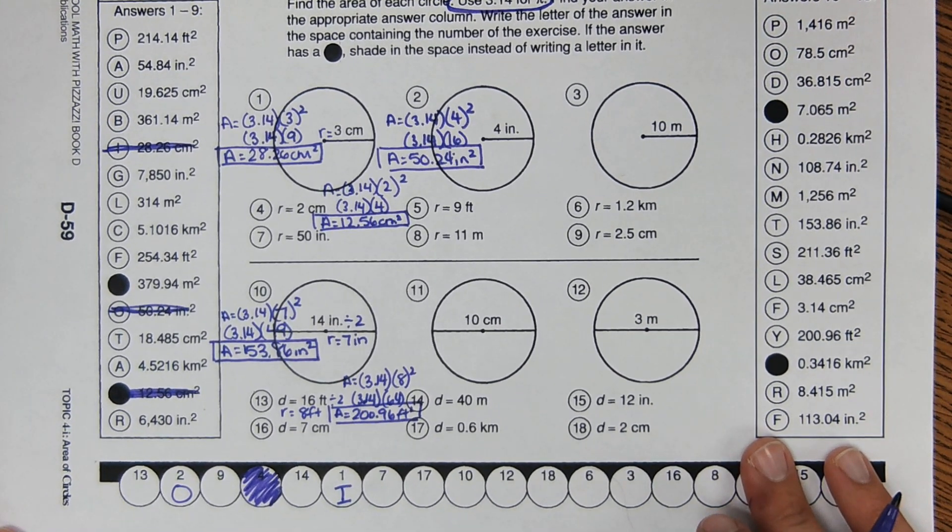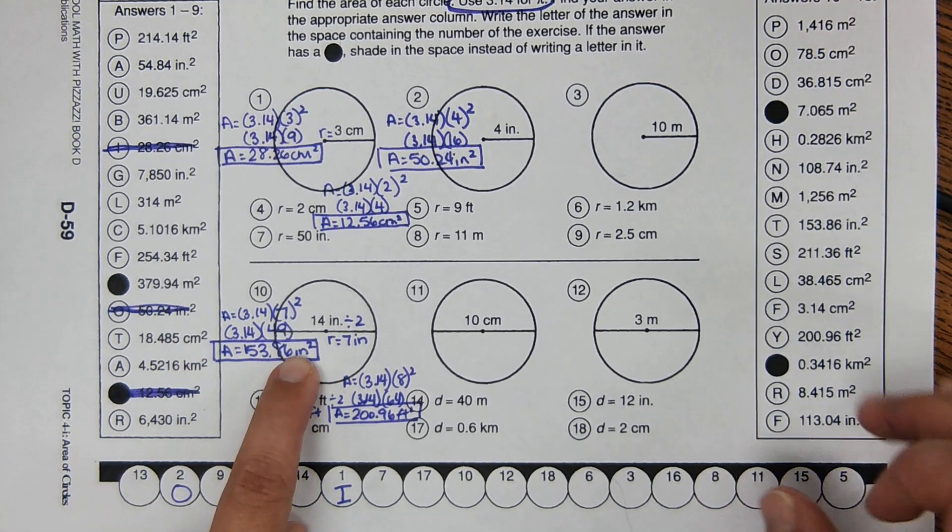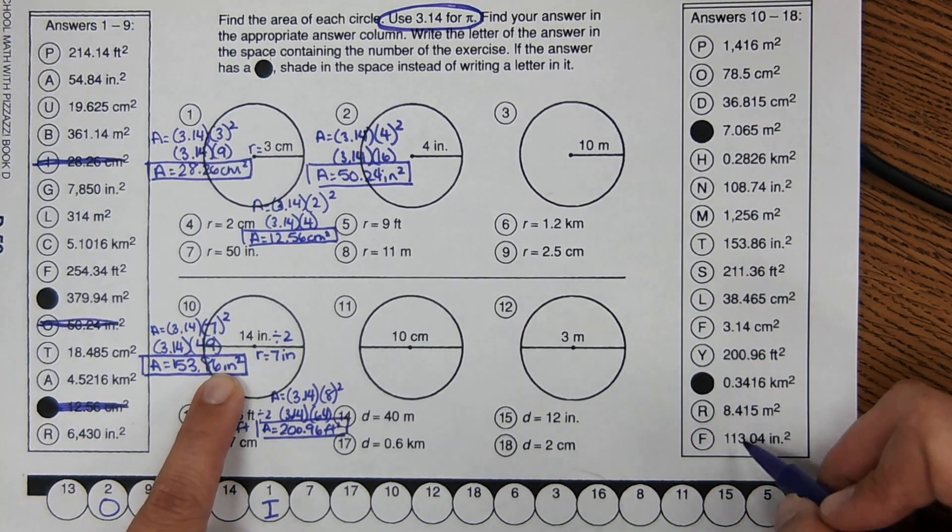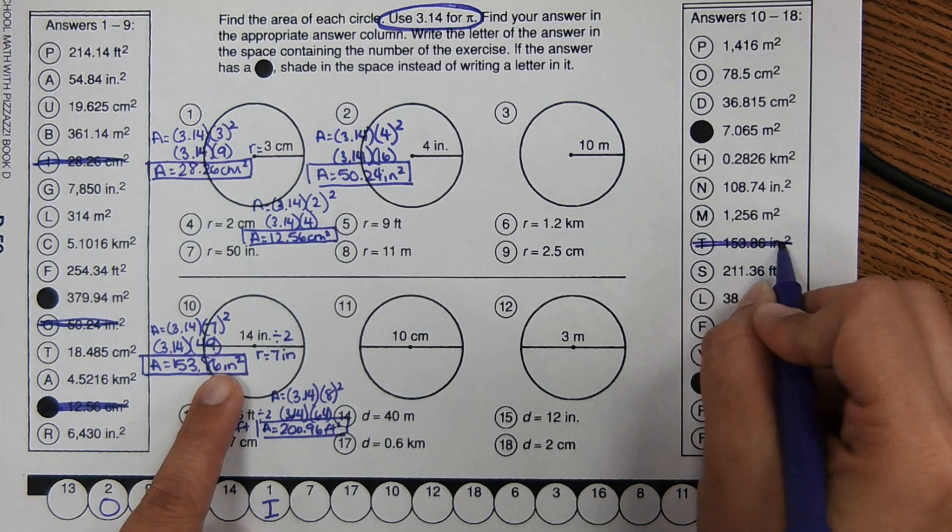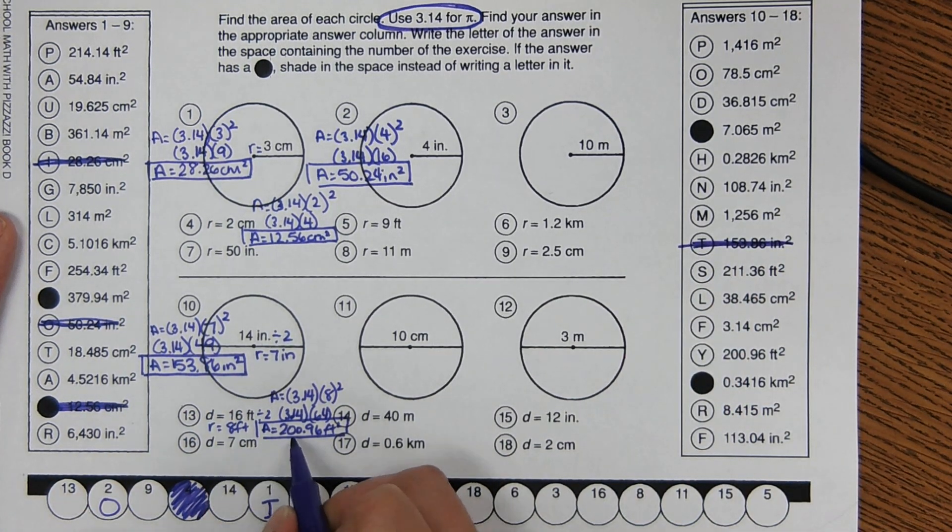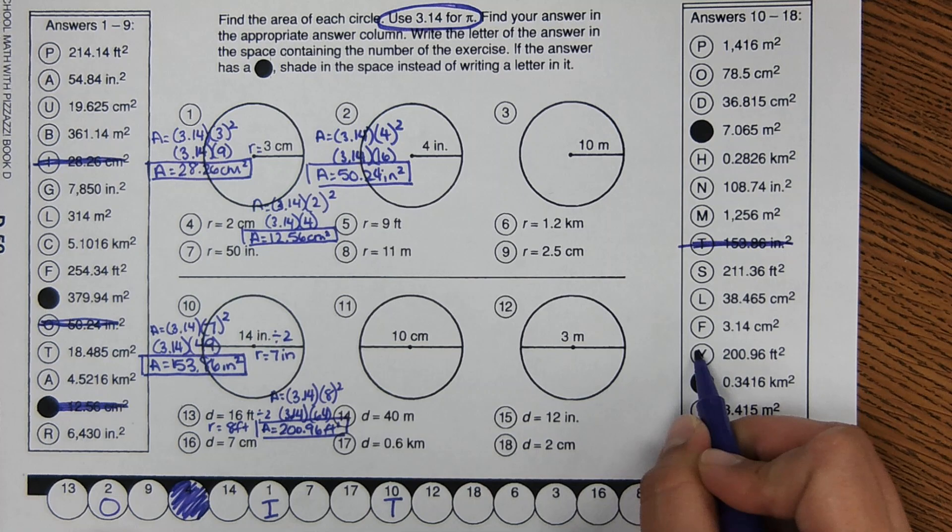And then number 10, these answers will be over here. So number 10, 153.86 is T. And then 13, Y.